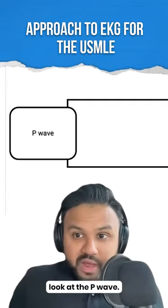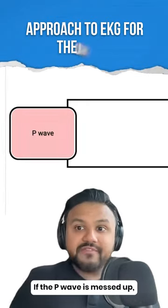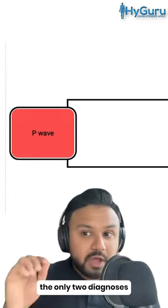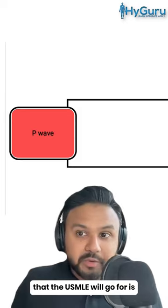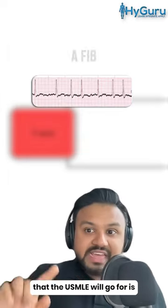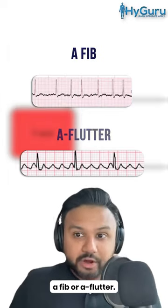The first step is to look at the P wave. If the P wave is messed up, the only two diagnoses that the USMLE will go for is AFib or AFlutter.